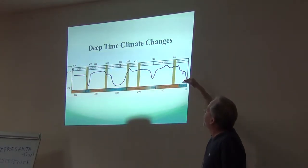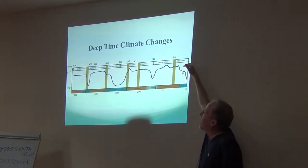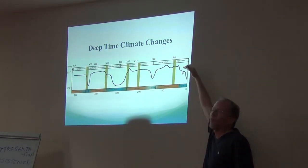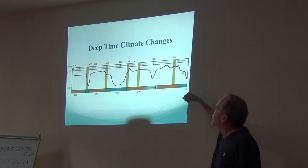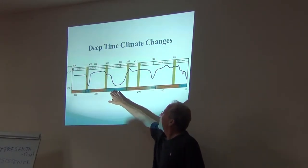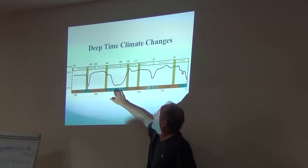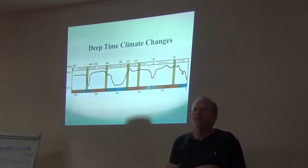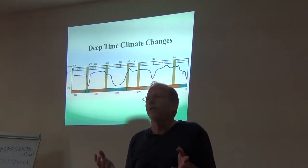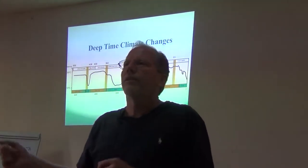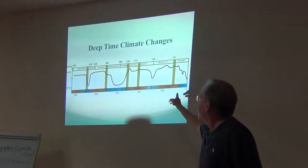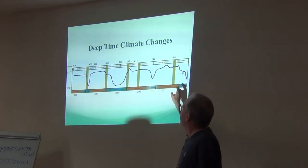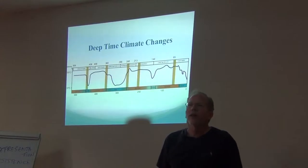This chart covers millions of years of time. When the blue line is high, the overall global temperature is high, and when the blue line is low, overall global temperature is low. You can see that the cold periods correspond to periods of ice. There have been different glacial periods back hundreds of millions of years, and those are represented along the bottom as areas of ice formation on the planet.